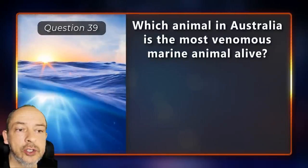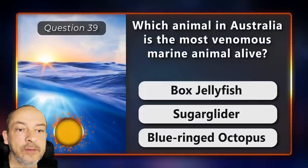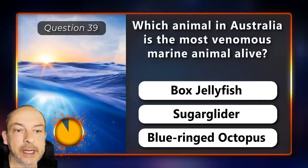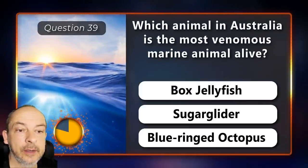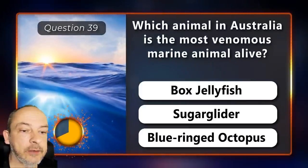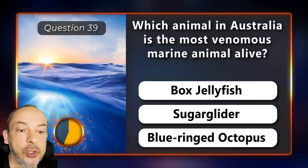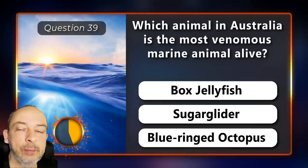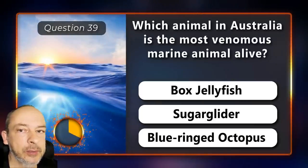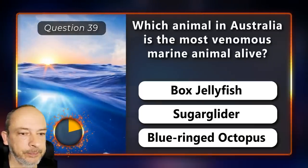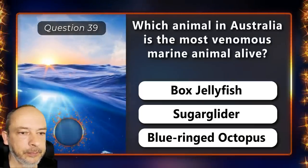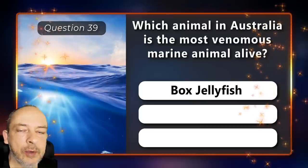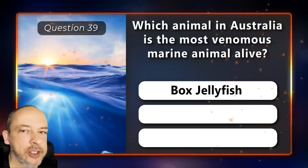Which animal in Australia is the most venomous marine animal alive — the box jellyfish, sugar glider, or the blue-ringed octopus? The box jellyfish.